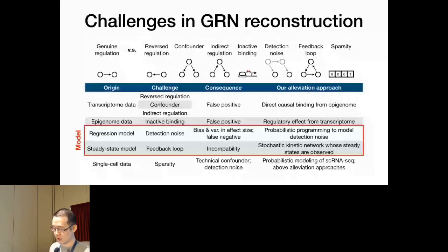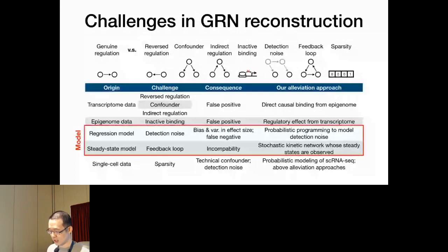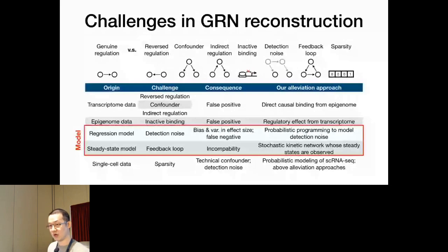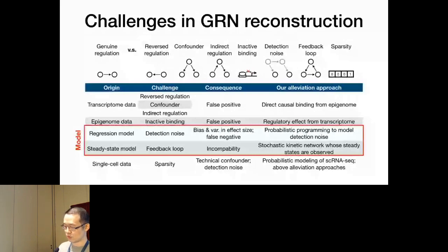We compare our approach with existing approaches for reconstructing gene regulatory networks from single-cell data that also account for transcription factor binding information. Key differences include that our method accounts for cell-type-specific chromatin accessibility and transcription factor binding information, and uses kinetic models that can capture feedback loops and detection noise in single-cell data. We perform several benchmarks, including a transcription factor binding benchmark with ChIP-seq data and perturbation experiments that also consider indirect effects and feedback loops.